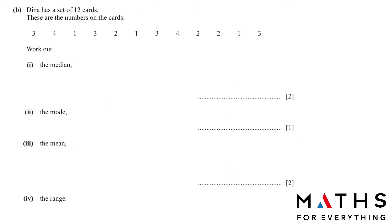Part B. Dina has a set of 12 cards. These are the numbers on the cards. Work out the median. To find the median, we have to write from low to high. We write it in this order. And median is the middle number, but if you have an even number like you got 12, so you cannot have a middle number, right?